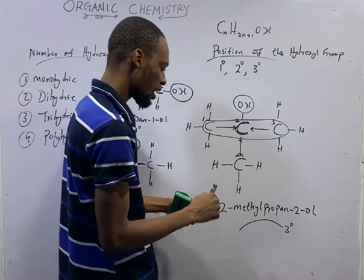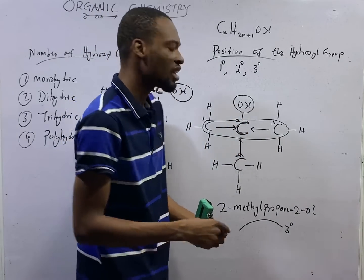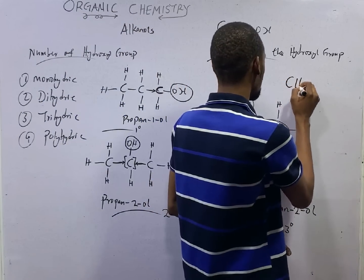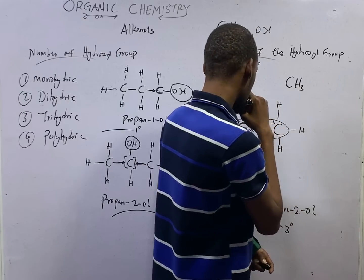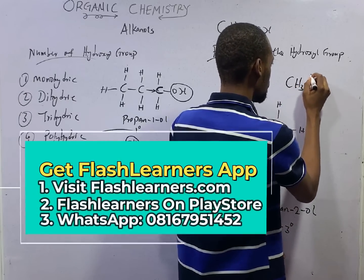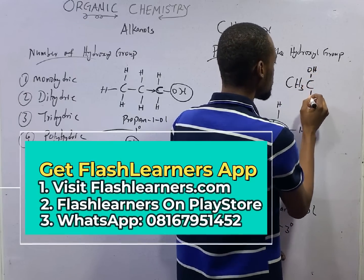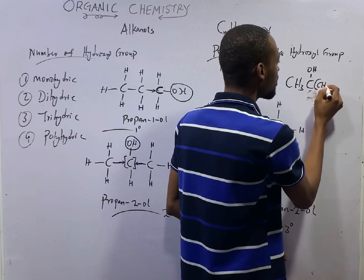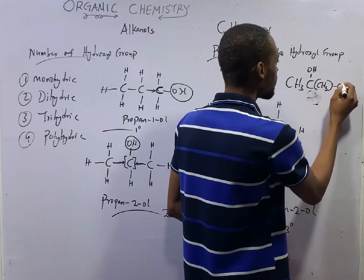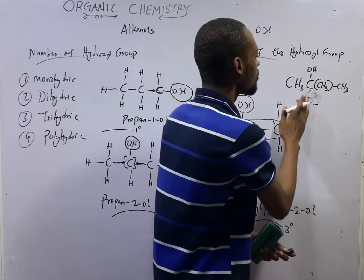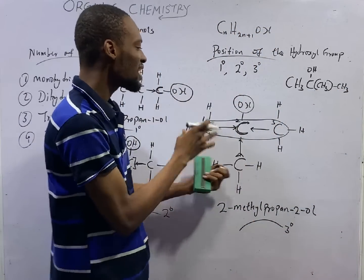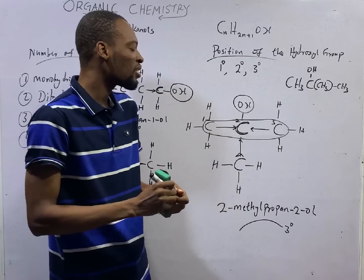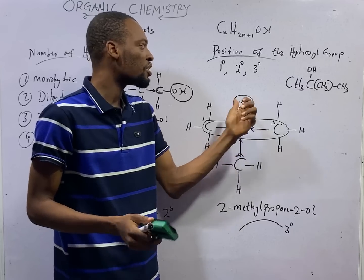If in the exam you are given a structure in condensed form — something like CH₃, CH₃, CH₃ — expand the structure first to see how the carbon atoms are linked. With that, you will know how many other carbons are linked to the one carrying the OH group.